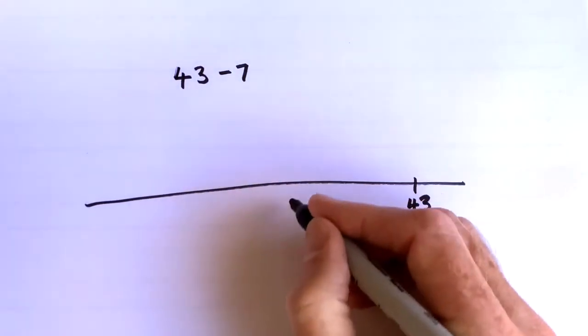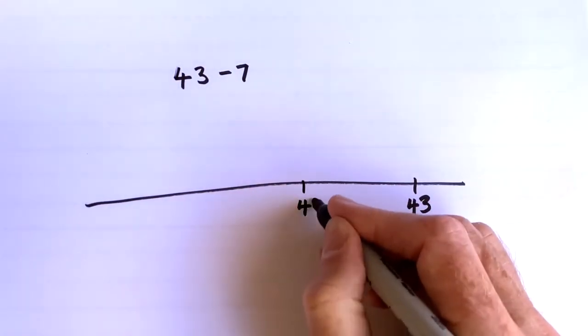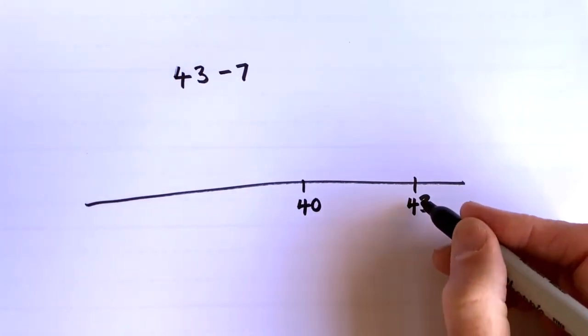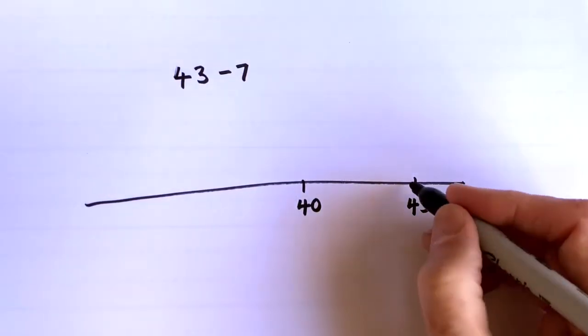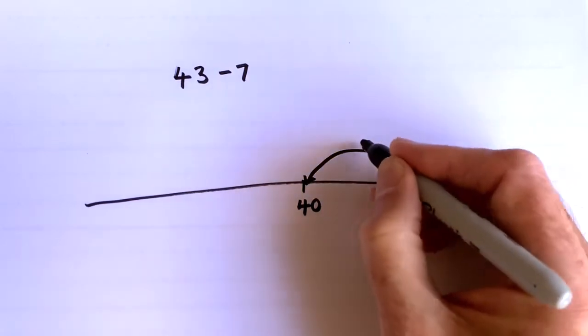the 10 before that is 40, and children should know that the gap between 40 and 43 is a jump back of 3.